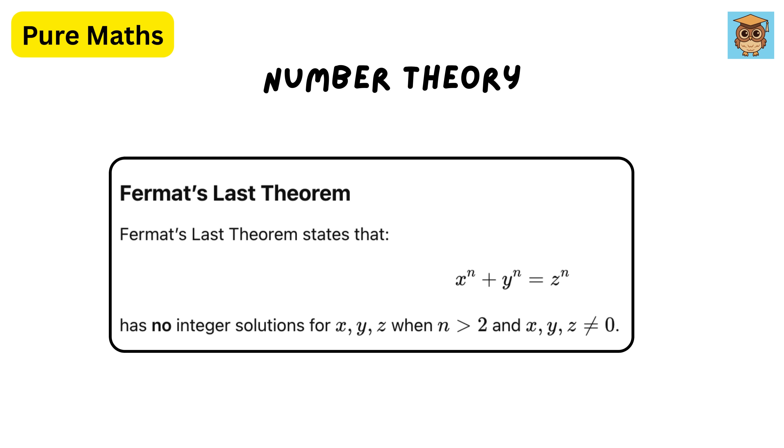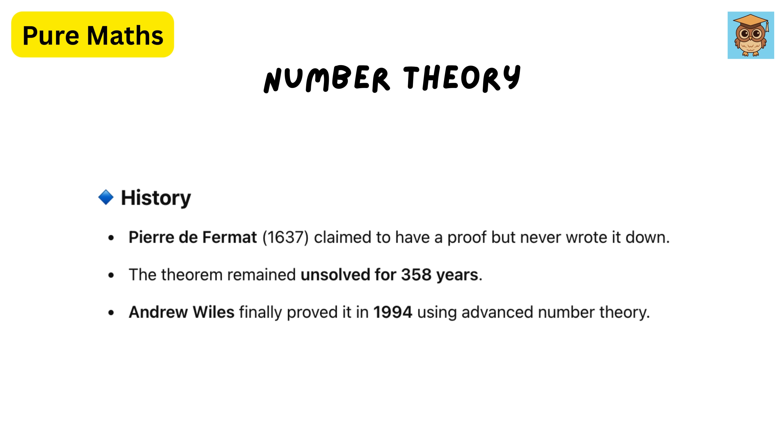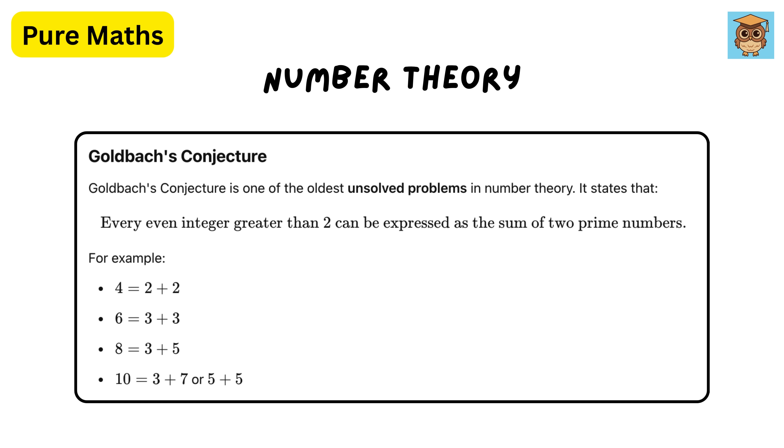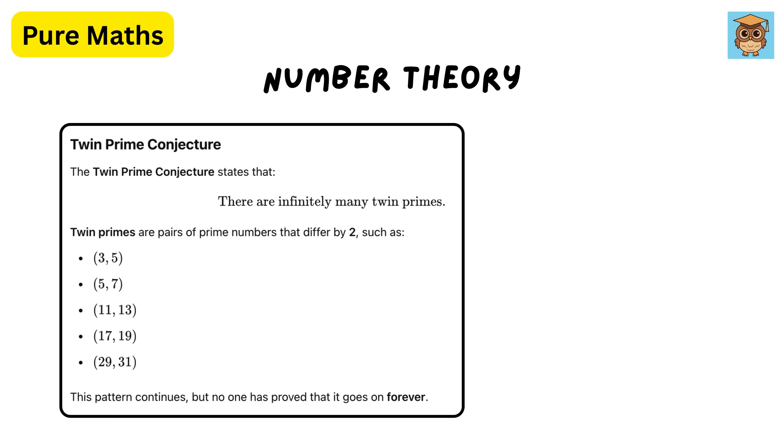Like this one called Fermat's Last Theorem, which was proved in 1994, after 350 plus years. Or this one which is the Goldbach conjecture, which is still unproven, or this one which is twin prime conjecture. Nobody has proved this yet. If you do, you'll become famous in math history.